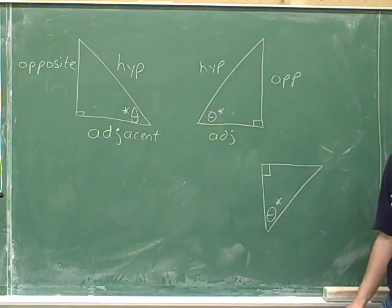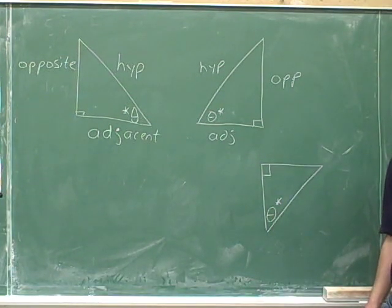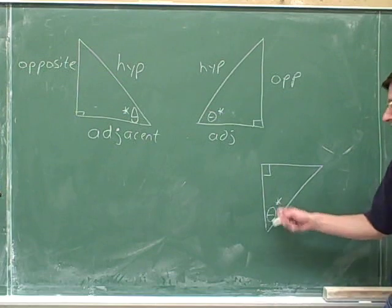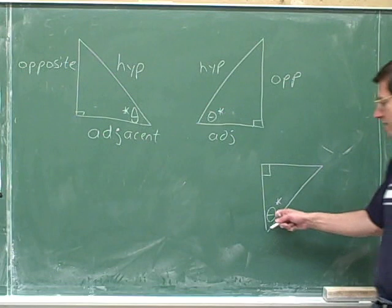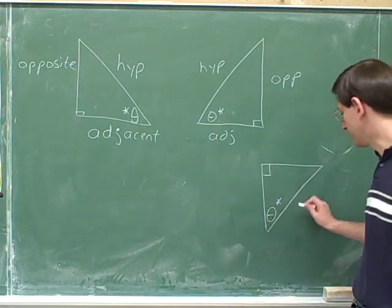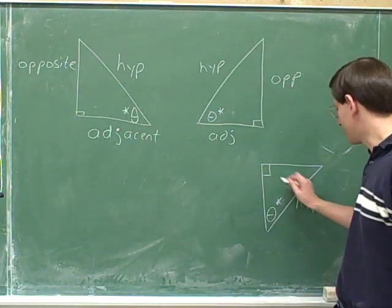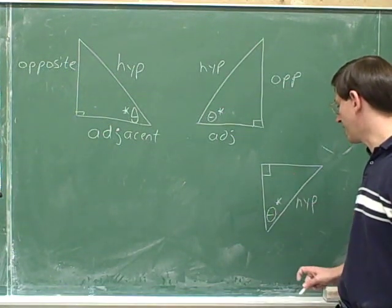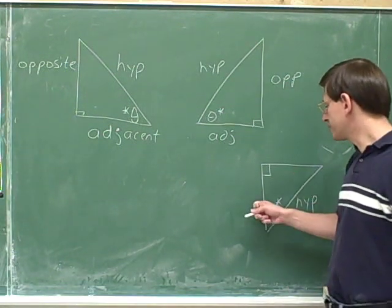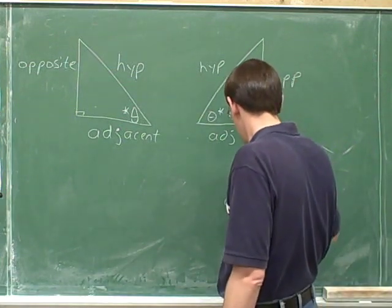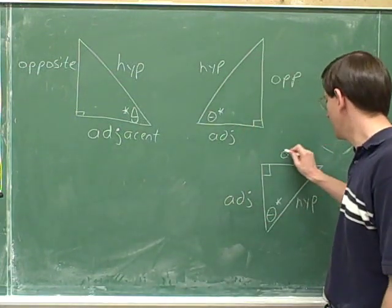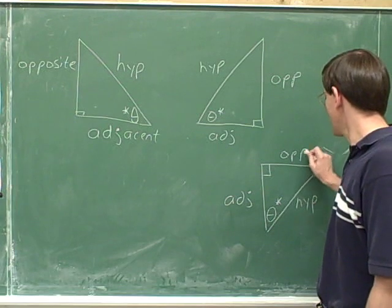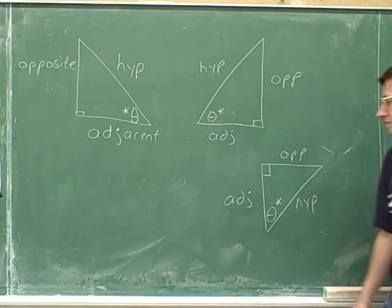Pause the video and try to label the hypotenuse, adjacent, and opposite sides for this triangle. Again, we're focusing on this angle down here. Here's the hypotenuse, opposite to the 90-degree angle. Now it's the vertical side that's adjacent to theta, and it's the horizontal side that's opposite to theta.